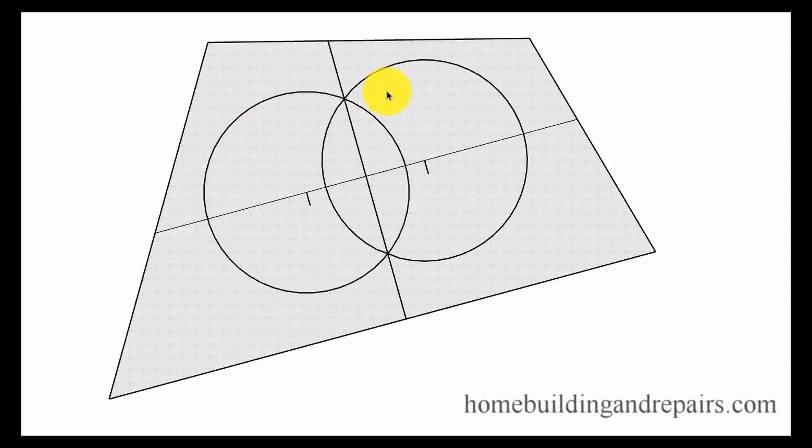And these can be smaller or larger. The larger they are, the more accurate I think it's going to be for your line here. And then you'll simply just connect where the circles intersect. These points right here will give you the 90 degree angle. So let's go ahead and run through it.